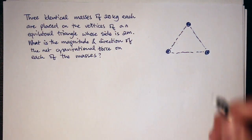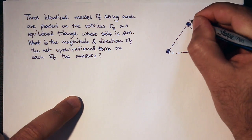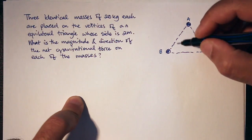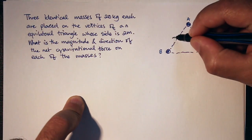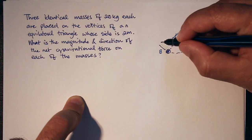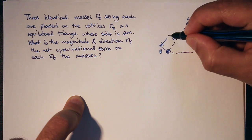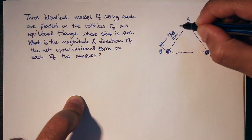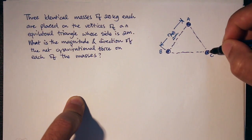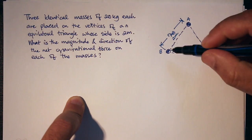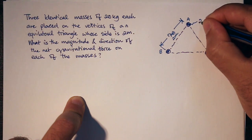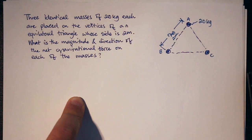To start with, I'm going to label these masses A, B, and C. This distance — the two meters as per the problem — is the distance R_AB, the distance between A and B. And R_AC and R_BC are all equal to two meters as well. Each one of these masses is 20 kilograms.